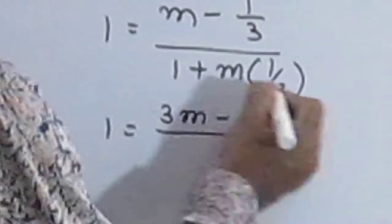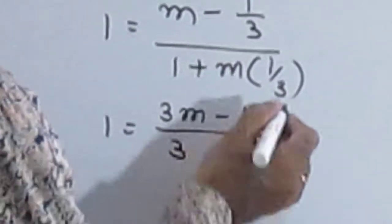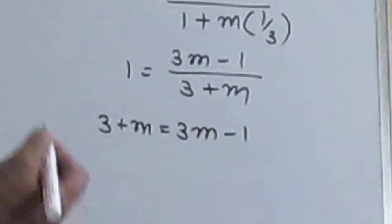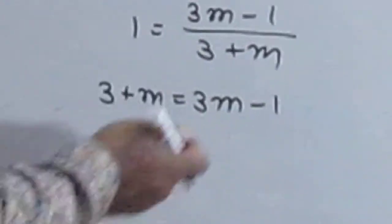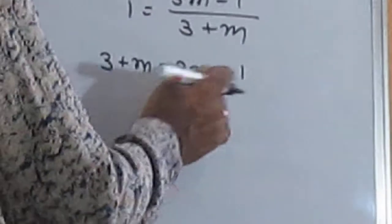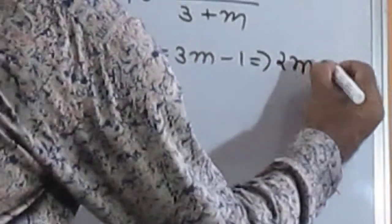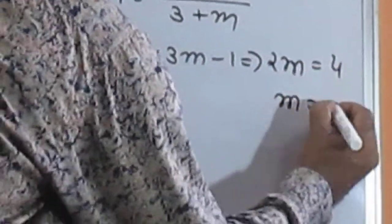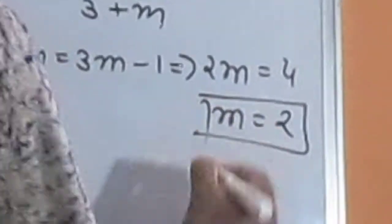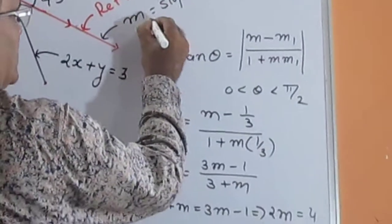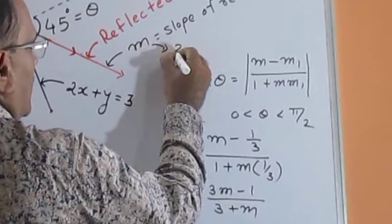So 3 plus m is equal to 3m minus 1. Then 2m is equal to 4, that means m is equal to 2. The slope of the reflected line is found — the value is equal to 2.